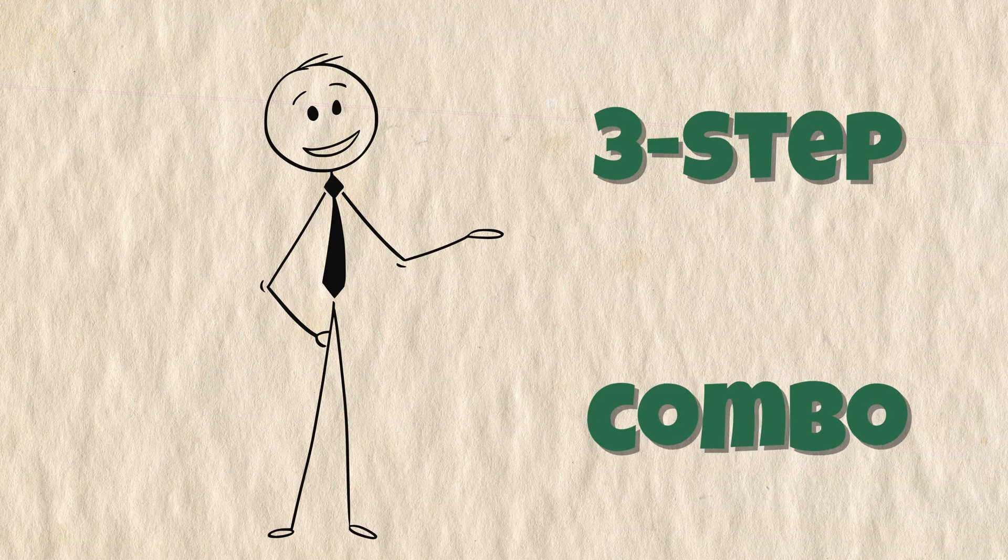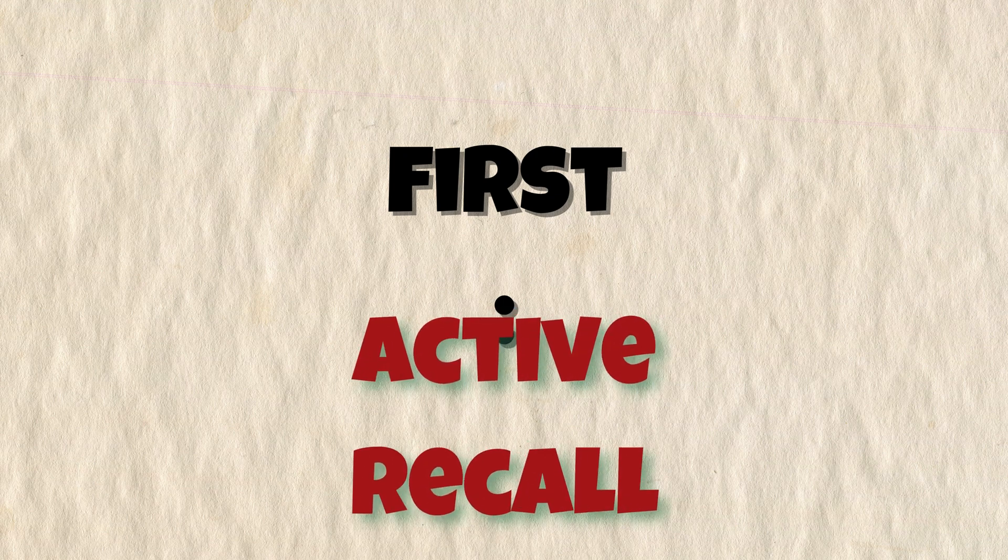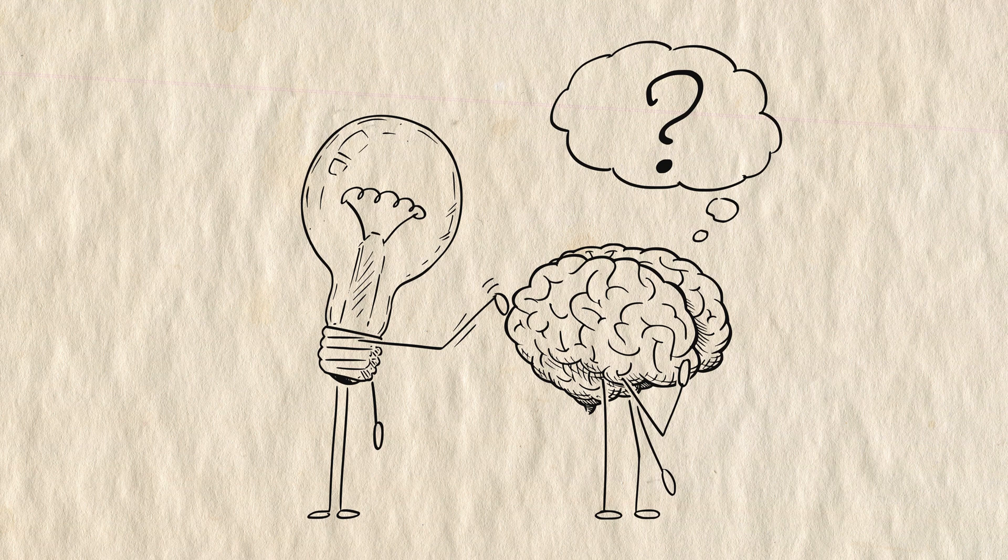Here's the three-step combo that rewired Ethan's brain. First, active recall. Stop passive re-reading. Force your brain to retrieve info by testing yourself without notes.